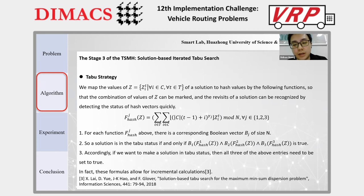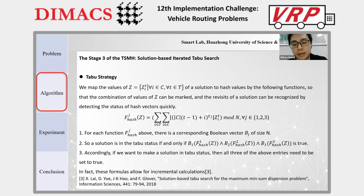For each hash function, there is a corresponding boolean vector of size n. A solution is in taboo status if and only if the given condition is true. Accordingly, if you want to place a solution in taboo status, all three of the above entries need to be set to true. Please note that this strategy does not actually mark a particular solution as taboo, but rather marks the combination of the timing of visits to each customer as being in taboo status.